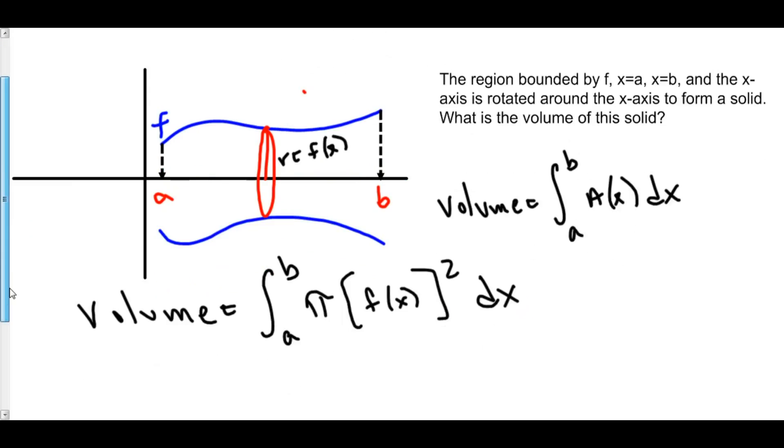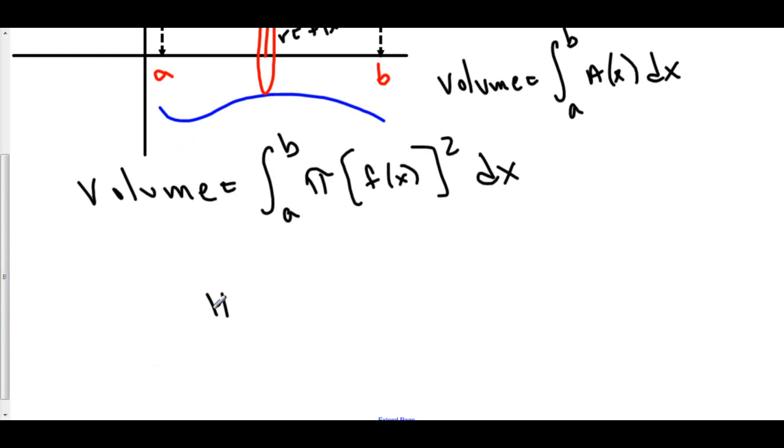We can trim this up a little bit. This is pi times the integral from a to b of f of x squared dx. And this is the formula for disk method.